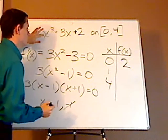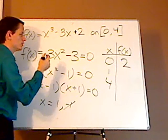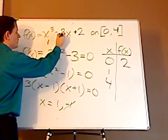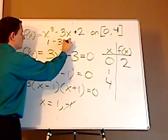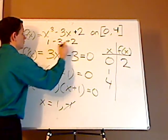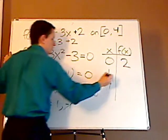When I plug in 1, 1 to the 3rd power, 1 cubed is 1. 3 times 1 is 3, so that's minus 3, plus 2. 1 minus 3 is negative 2. Negative 2 plus 2 is 0.